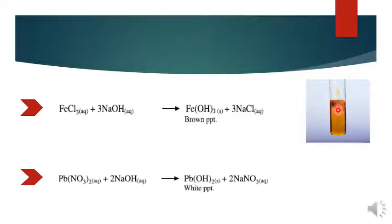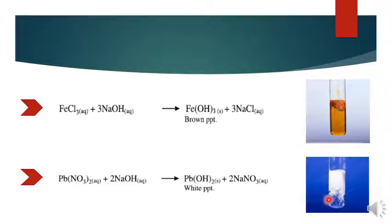Here is a question: you have lead nitrate solution. When you use NaOH with it, what will happen? You will get white precipitates — lead hydroxide. See the diagram: this was a clear solution, when you add NaOH, a white layer forms. Clear?